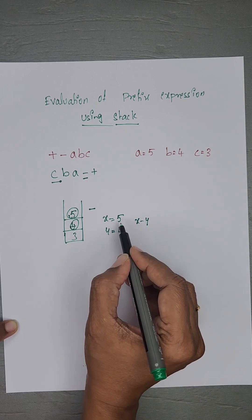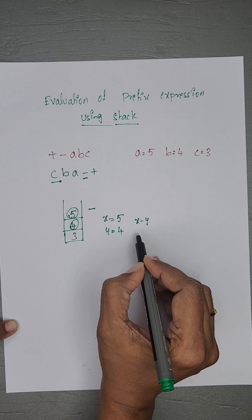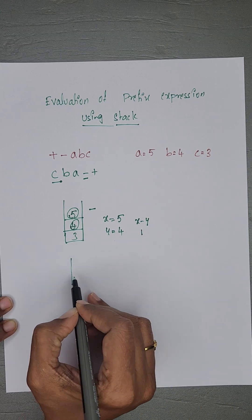In postfix, we perform y minus x. In prefix, x minus y. 5 minus 4 equals 1. Push the result into the stack.